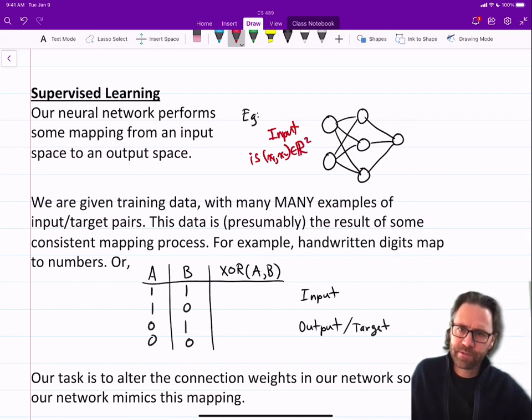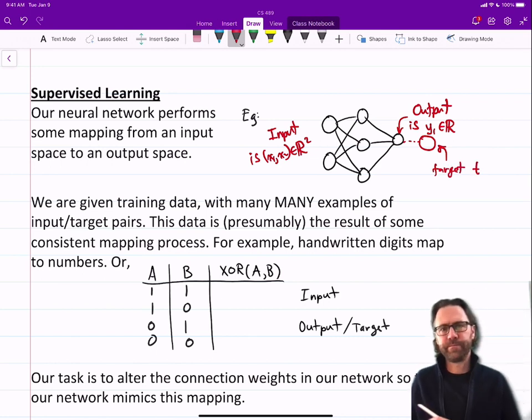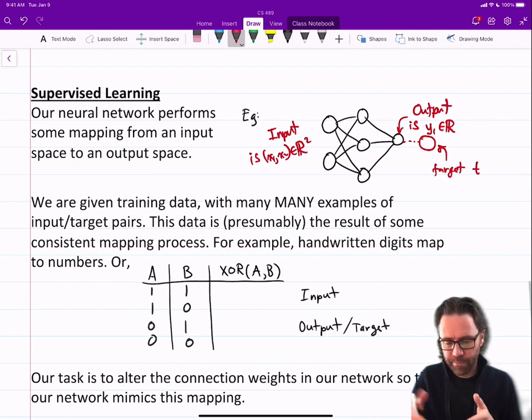And I'll say it's X1, X2, and they're taken from R2, let's say. And then we have output over here on the right. I'll call it Y, or Y1, I guess. And I'll just say it's a real number. And then in addition to that, we have a target T. So that's the basic anatomy of a neural network: input and output.